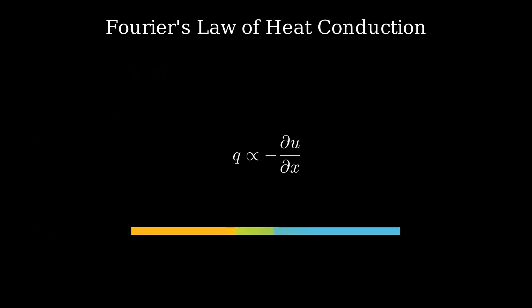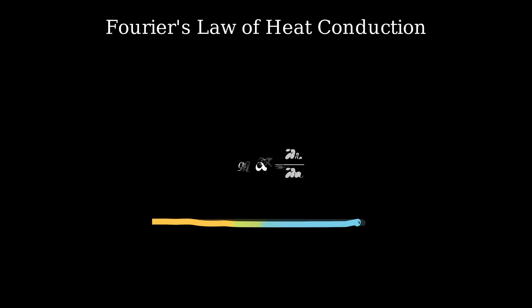Finally, this proportionality is present because apart from the temperature gradient, flux also depends on the material property. This should be quite clear as we know that heat movement depends on the type of material. For example, iron conducts heat more than glass. So we can just add another term called kappa, which is the coefficient of thermal conductivity and is just a material property.